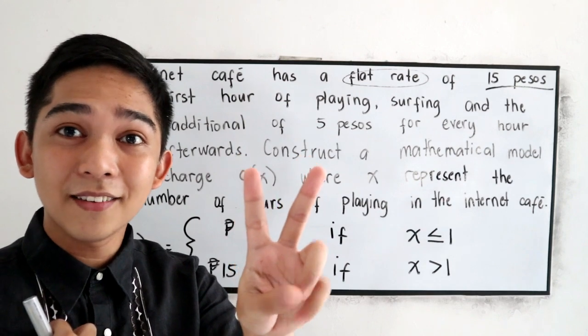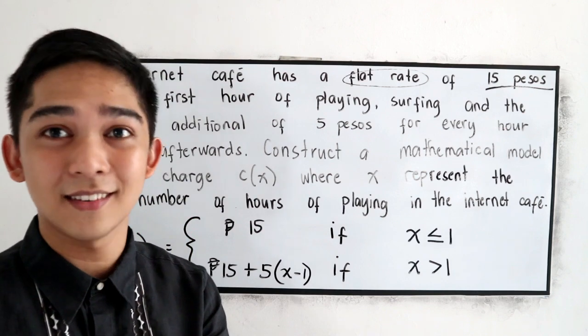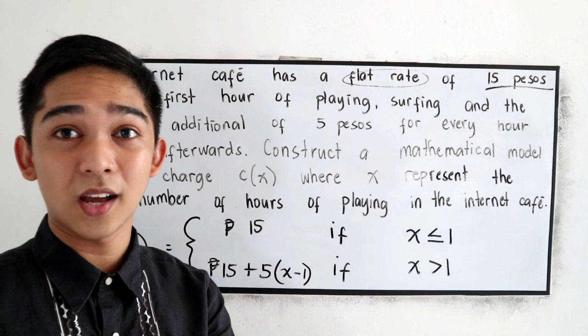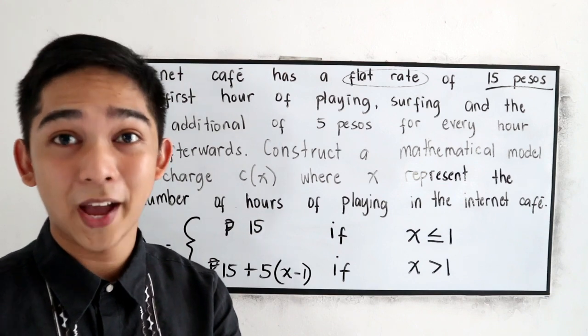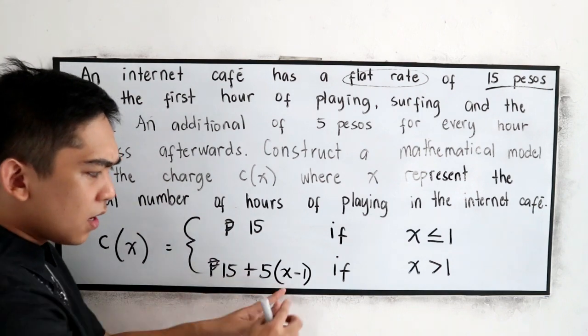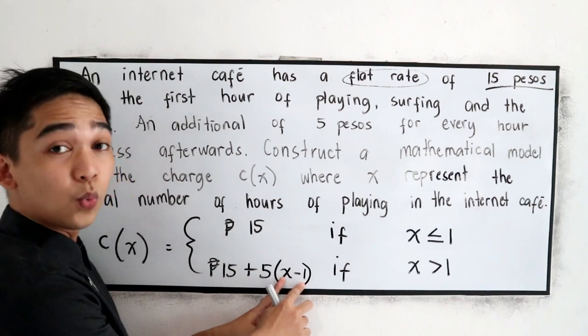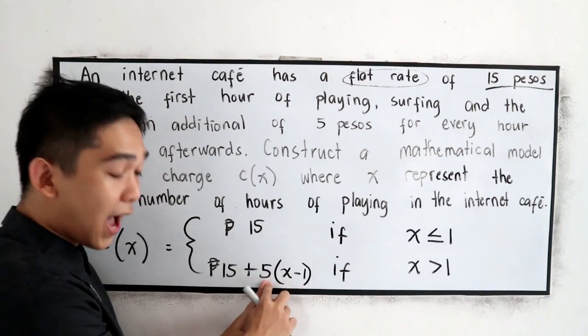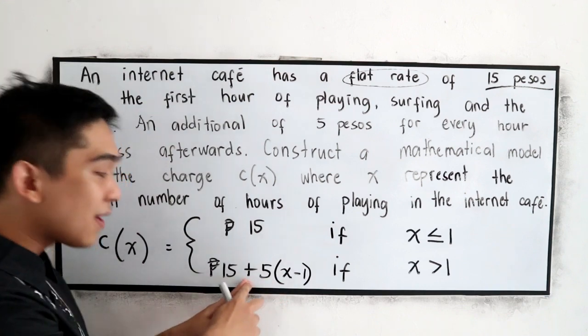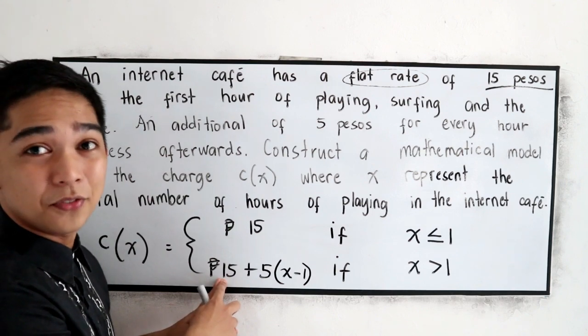Mag-add ako ng 5 pesos, so ang babayaran ko na sa loob ng 2 hours ay 20. I-check natin gamit yung second model natin, kapag 2 hours: 2 minus 1 that is 1, 1 times 5, that is 5, so 5 plus yung 15 natin which is the base.